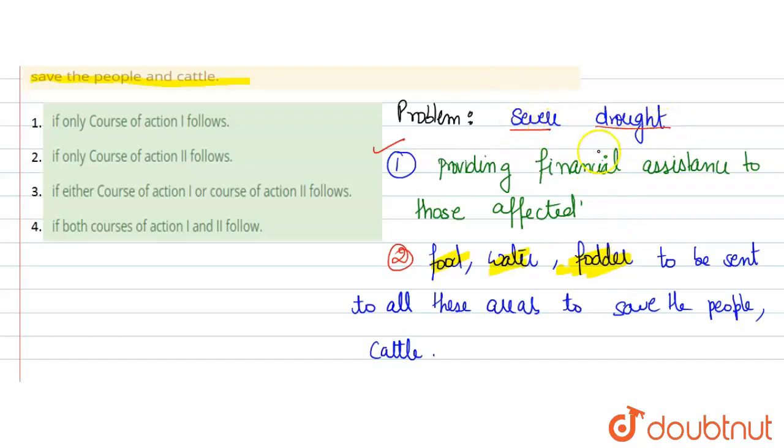जो इसकी सूखा पड़ने की problem minimize हो जाएगी। तो यहाँ पे आपका answer होगा option number 4 - if both courses of action 1 and 2 follow. Thank you.